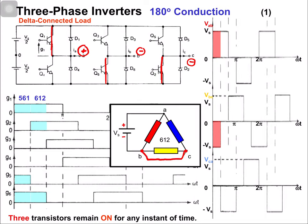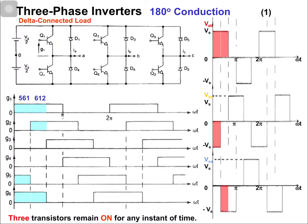Therefore, vab = +Vs, vbc = 0, and vca = -Vs. This is the voltage obtained when switching state 6, 1, 2 is applied.